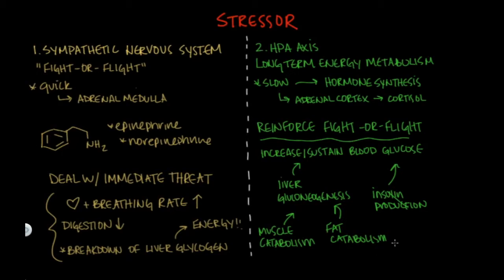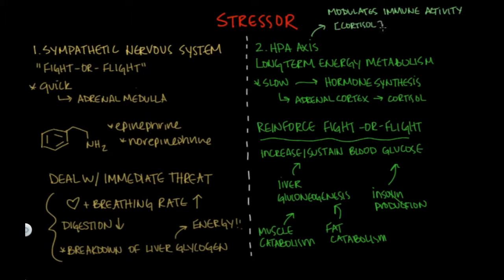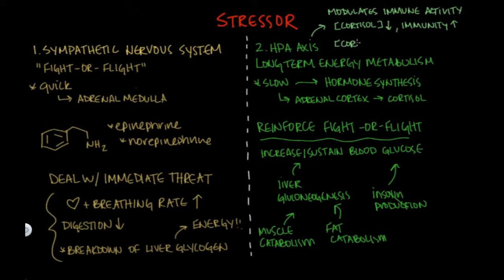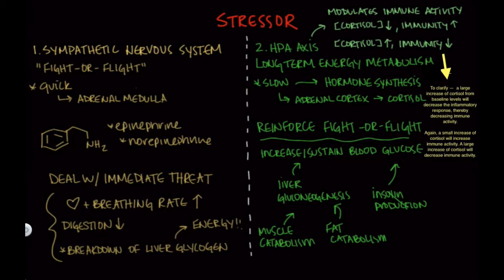Aside from increasing blood glucose levels, cortisol also has a huge role in regulating our immune system in times of stress, and it does so in a biphasic way. Towards the beginning of HPA axis activation, low levels of cortisol boost our inflammatory response and increase immune activity — very helpful for battling infections in a vulnerable situation, such as escaping a shark that just took a bite out of your arm. As cortisol levels increase over time, they actually start to have anti-inflammatory effects, which prevent our immune system from attacking our own cells.